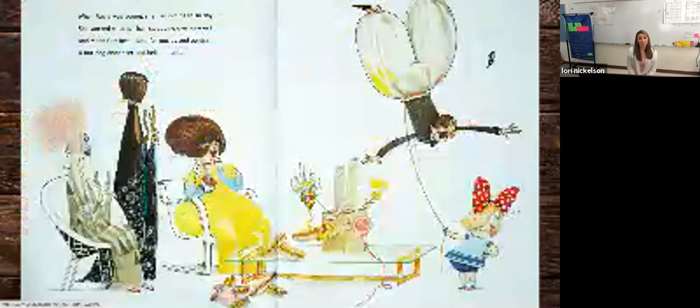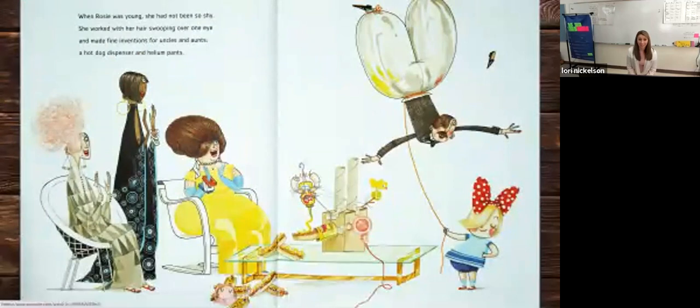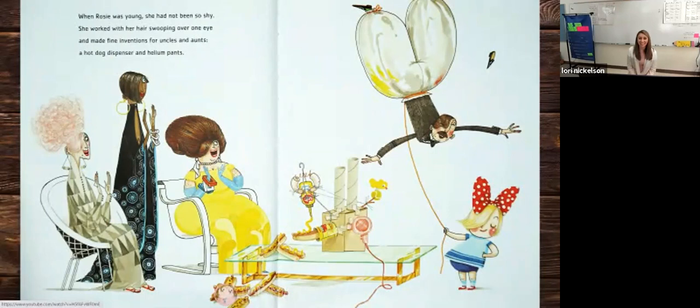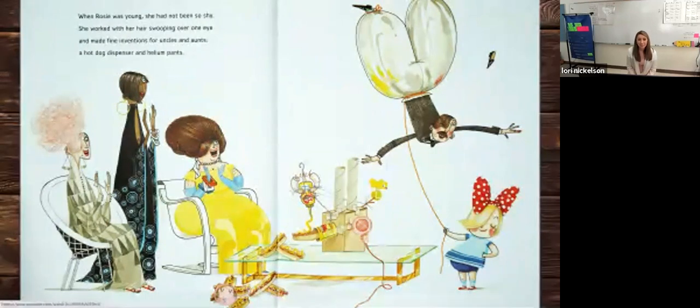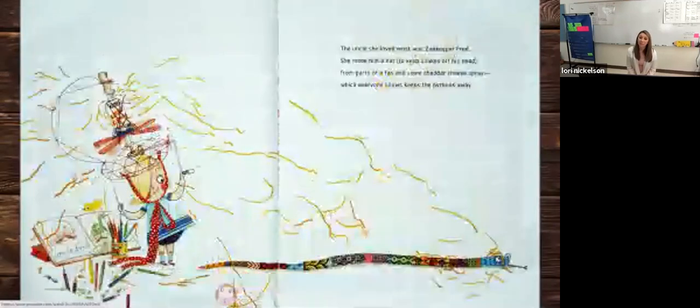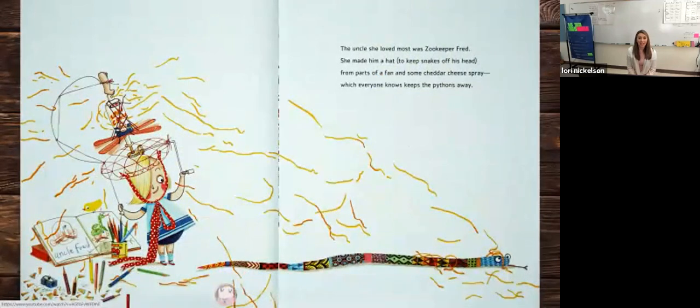When Rosie was young, she had not been so shy. She worked with her hair swooping over one eye and made fine inventions for uncles and aunts, a hot dog dispenser, and helium pants. The uncle she loved most was zookeeper Fred. She made him a hat to keep snakes off his head from parts of a fan and some cheddar cheese spray, which everyone knows keeps the pythons away.